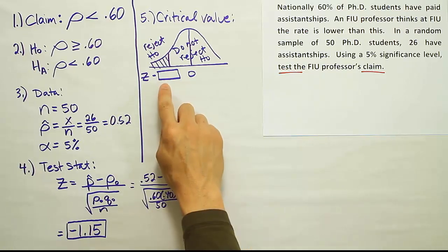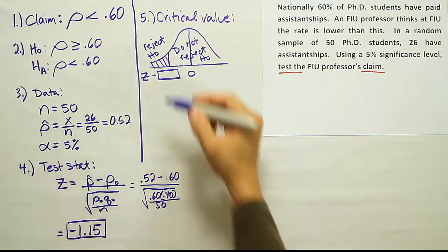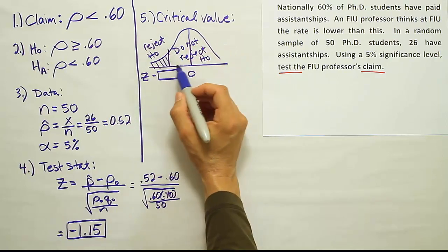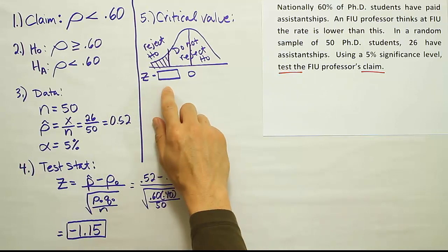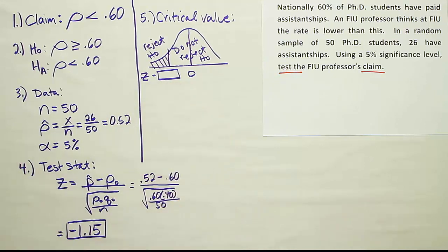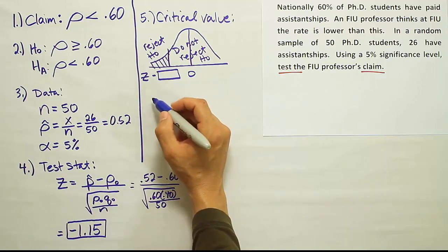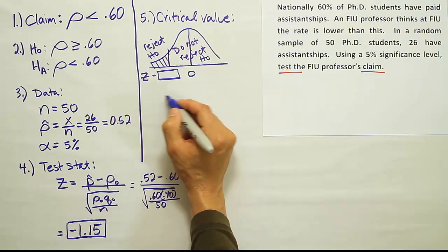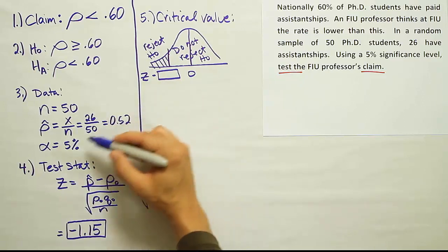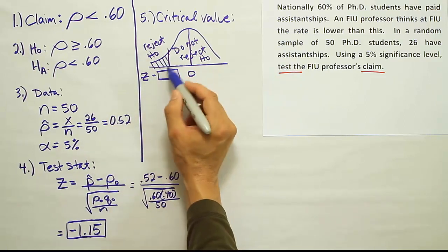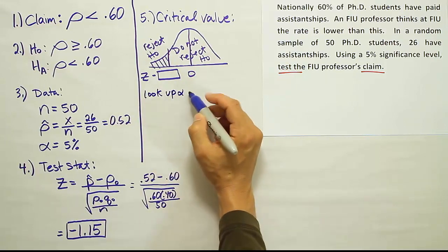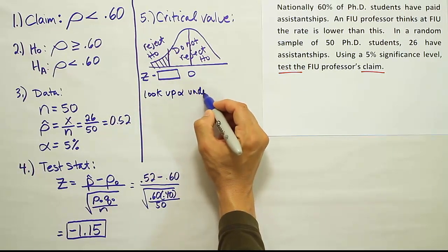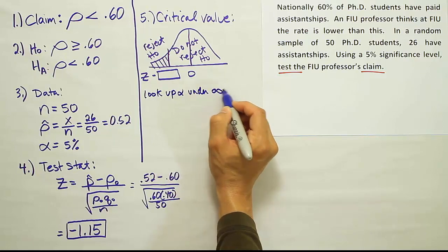So let's determine this critical value, the cutoff area where the do not reject region ends and the reject region begins. So let's try to figure out where the rejection region starts by identifying that critical Z value. In order to do that, we're going to go to the T table, actually, even though we're looking for a Z value. Remember, at the bottom of the T table, we have some critical Z values. And we're going to look up this alpha. Because we only have a one-tailed test, we're going to look up alpha under the infinity row of our T table.